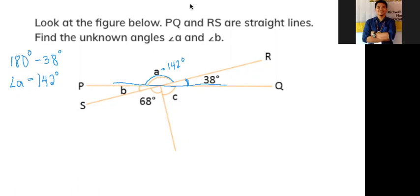How do we find angle b? Because angle b is vertically opposite to angle RCQ which is 38, when we see vertical opposite, if we extend the angles here, the side of the angles of angle b...